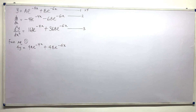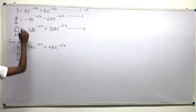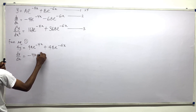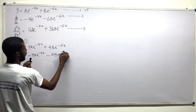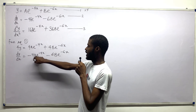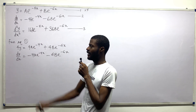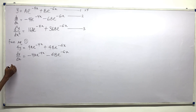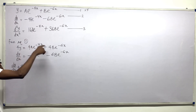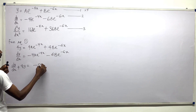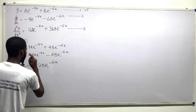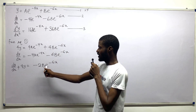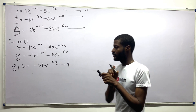Equation 2 is: dy/dx = minus 4Ae to minus 4x minus 6Be to minus 6x. To eliminate the A terms, we add the two equations together. The A terms cancel, giving: dy/dx + 4y = minus 2Be to minus 6x. Call this equation 4.